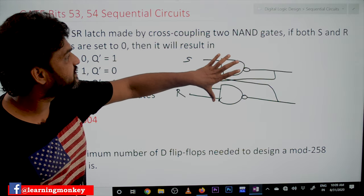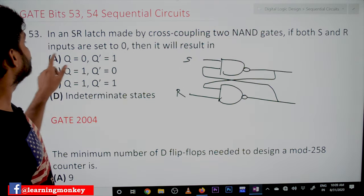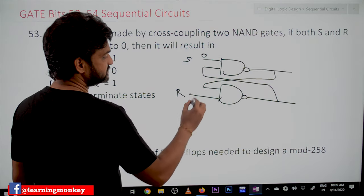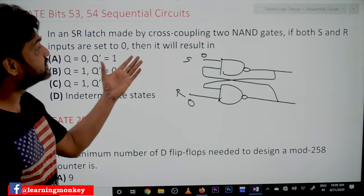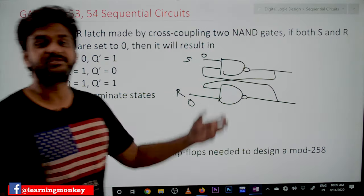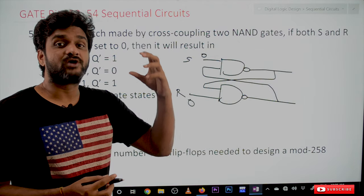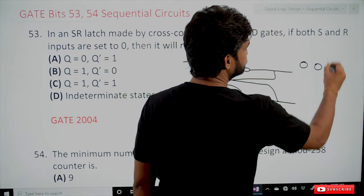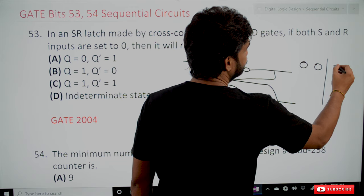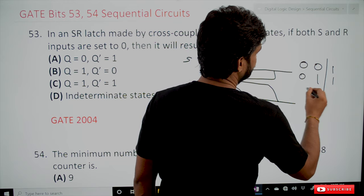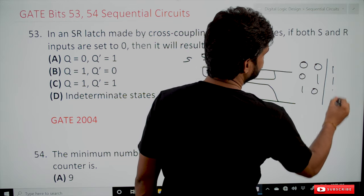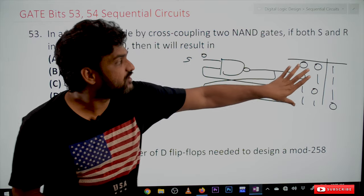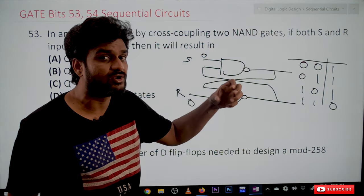If the SR latch is constructed by using the cross-coupling of NAND gates and both S and R inputs are set to zero, what will it result in? It is very simple. Based upon the truth table of the NAND gate: if inputs are 0,0 the output is 1; if 0,1 the output is 1; if 1,0 the output is 1; and if 1,1 the output is 0.